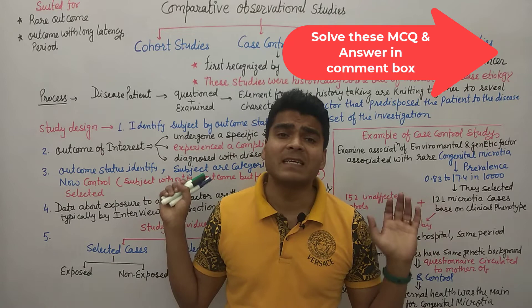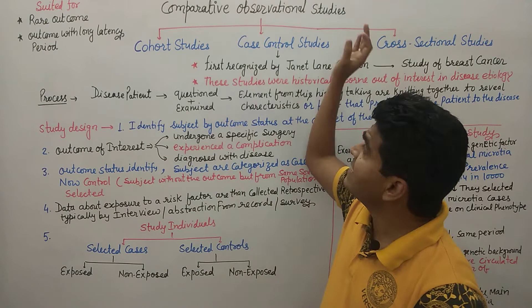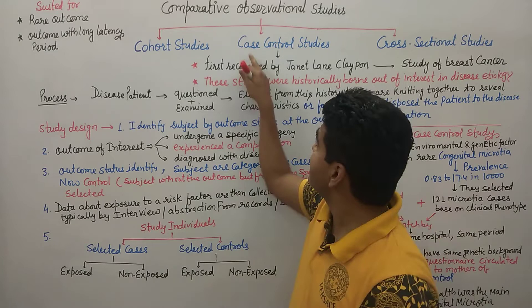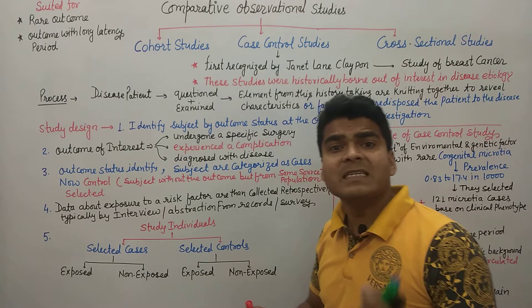Let's understand what comparative observational studies are. We have divided them into cohort study, case control study, and cross-sectional studies. In this lecture we are discussing the case control study, so first understand who first utilized this study and gave the concept.